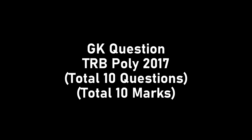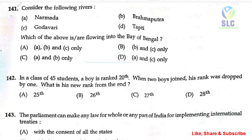The first question is: consider the following rivers — option A: above is flowing into the Bay of Bengal. The correct answer for this question is option B: Brahmaputra and Godavari.